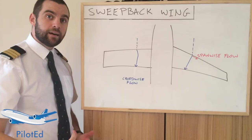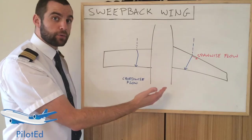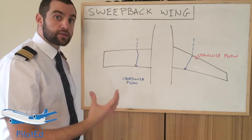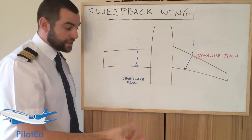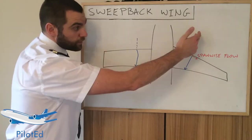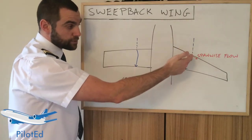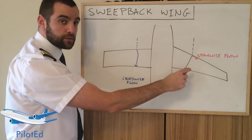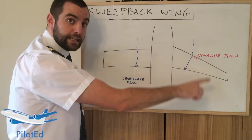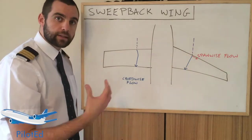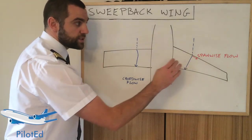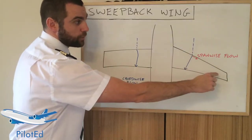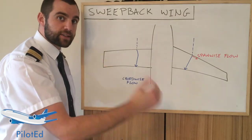So how do we delay Mcrit? We introduce a different component to the flow. By angling the wing backwards we generate another type of flow, and this flow is taken away from the cordwise flow. The cordwise flow will still flow parallel to the chord; however, some of that airflow will be translated into spanwise flow. Spanwise flow travels along the leading edge and it does not accelerate — that's one of the key points. The more we angle the wing backwards, the more spanwise flow we're going to have, and the faster the aircraft can go.